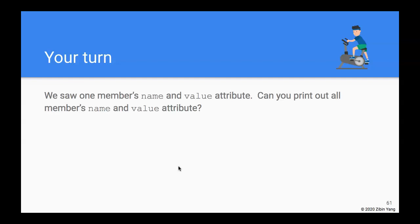What I would like you to do is: we saw the name and value attribute, right? So can you print out the name and value attribute for all the members? Pause the video and give this a try.